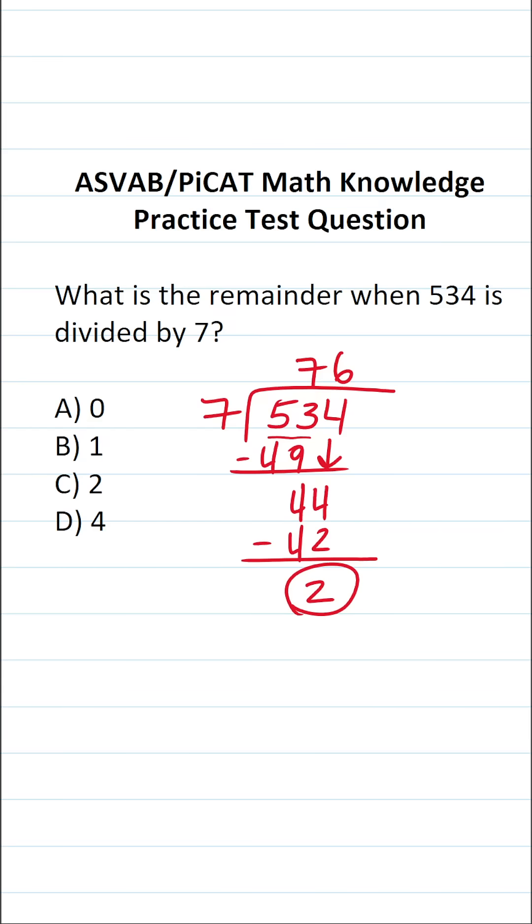Now we can't do this long division any further without adding decimals and zero placeholders. Therefore, that tells us that 534 divided by 7 has a remainder of 2. So the correct answer to this one is going to be C.